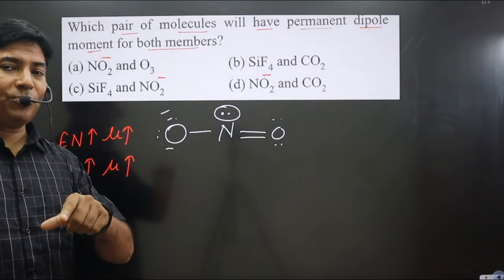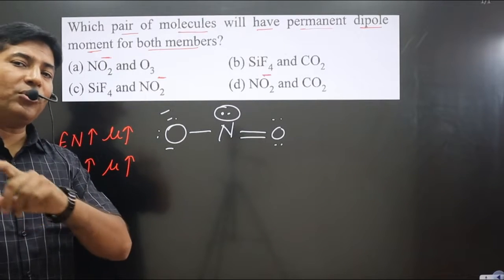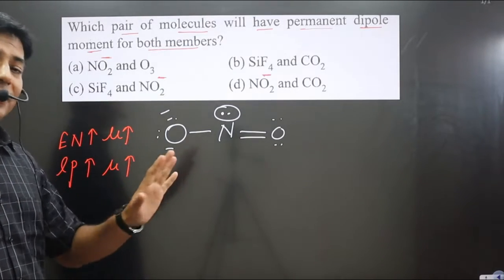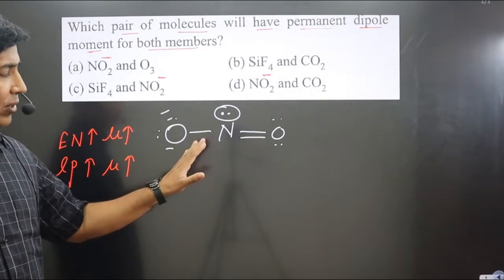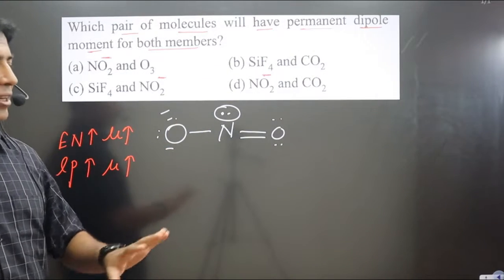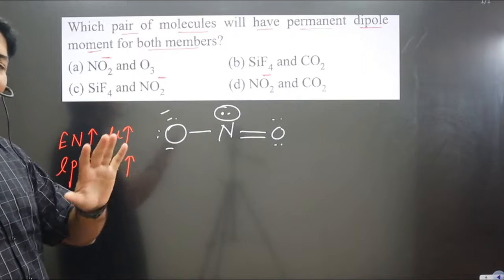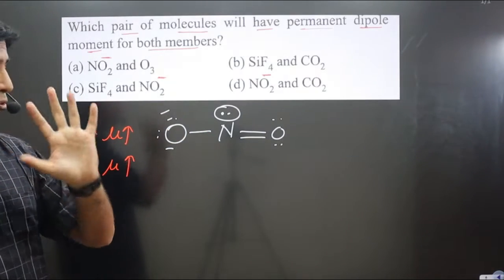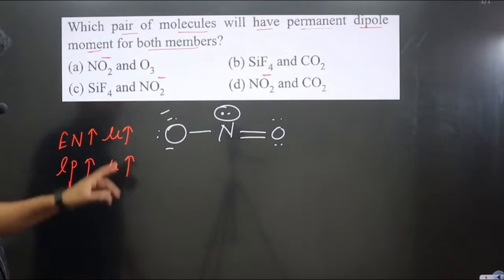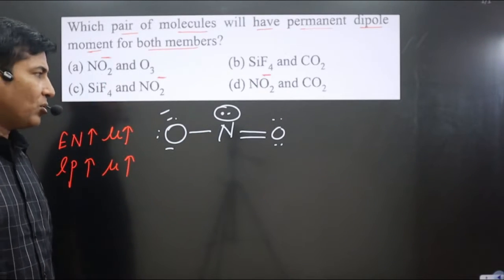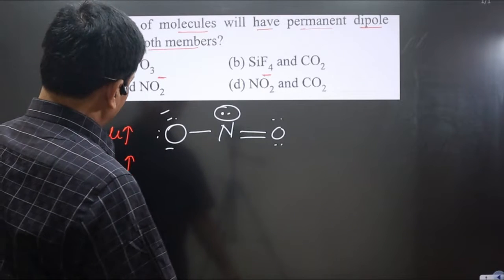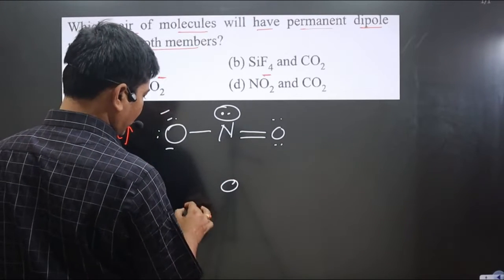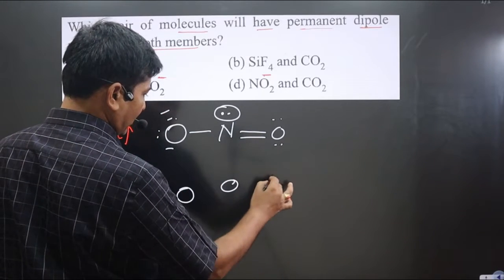Nitrogen is the central element and has lone pairs. Since nitrogen has lone pairs, its dipole moment will never be zero — hence NO₂⁻ is polar by nature and will have a permanent dipole moment. Now let's look at ozone, O₃.